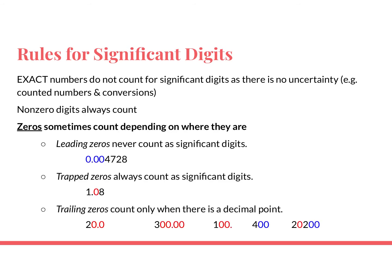This is the part that students find hard — it's about zeros. Whether a zero counts or not depends on where the zeros are in the number. Leading zeros never count as significant figures. I've highlighted them in blue — zeros that are in front never ever count. Trapped zeros — like a zero trapped between a one and an eight — always count because they are between non-zero digits.